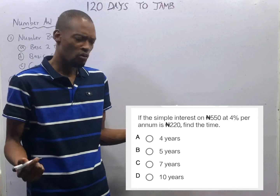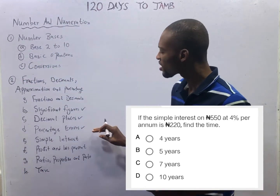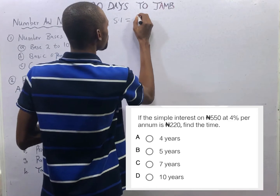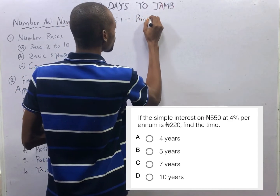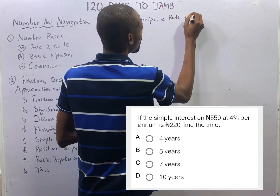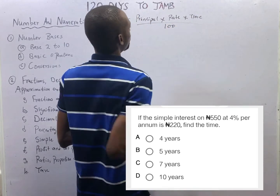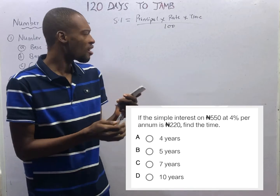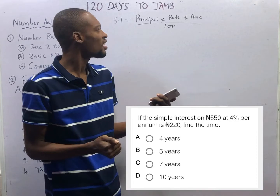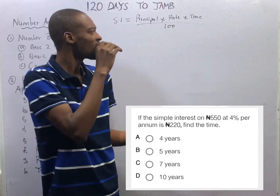Simple interest. When you are given simple interest questions, what you are expected to know is that the simple interest SI equals principal times rate times time, all over 100. This is the simple interest formula. Principal is the money available for business — the loan you give out, or take, or the money you use to start a business. That is principal.